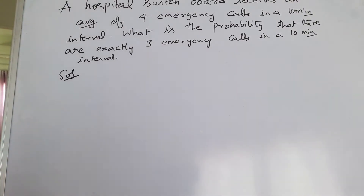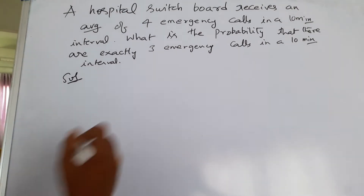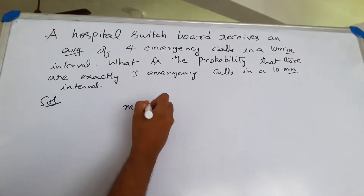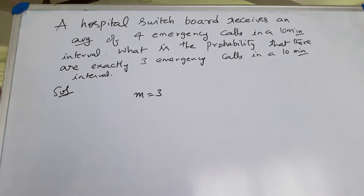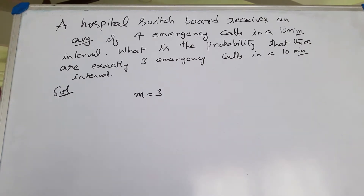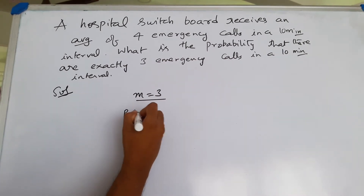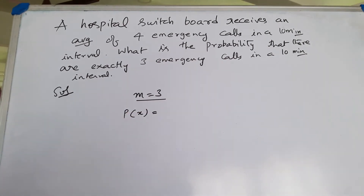A switchboard receives an average of four emergency calls, so let us put m as three. In a 10-minute interval, what is the probability of exactly three emergency calls in 10 minutes? Since m is three, we will use Poisson's distribution.